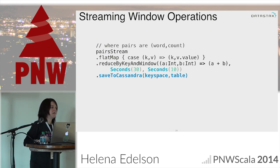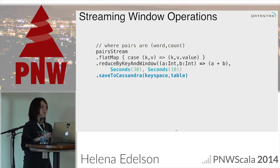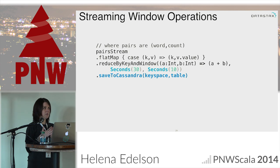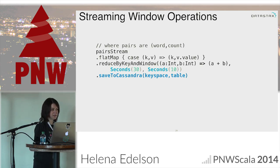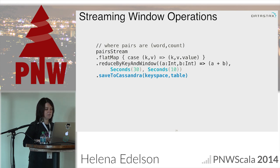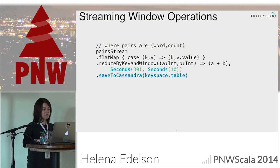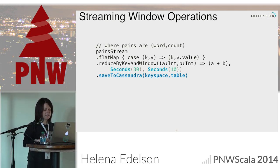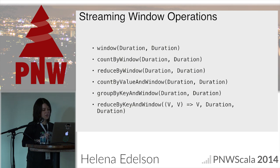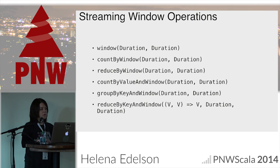One slide on Spark Streaming window operations. For example, if you have a use case of working with time series data and you want to do samplings in five-second windows of time, you can flat map over that data, do a reduce-by-key-in-window, specify the window duration, take that data, and save it to Cassandra — very concise. Some major window operations include count-by-value-in-window, group-by-key-in-window, and you can configure those windows in your code very easily.